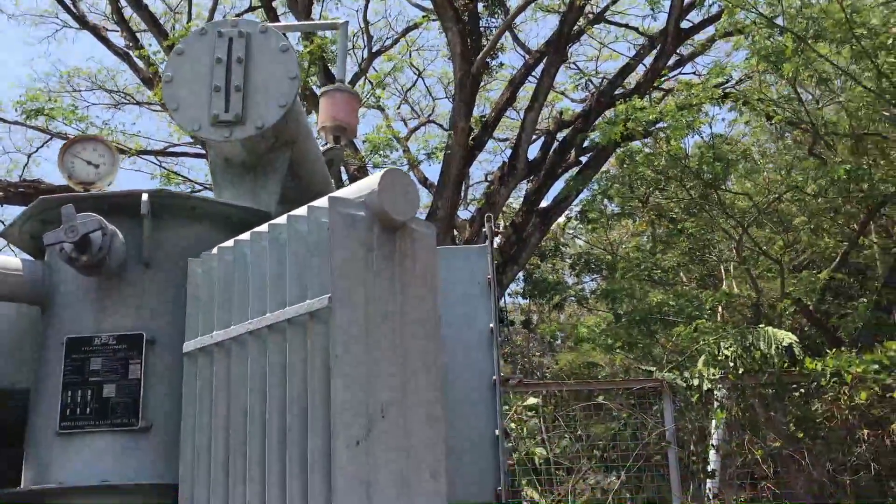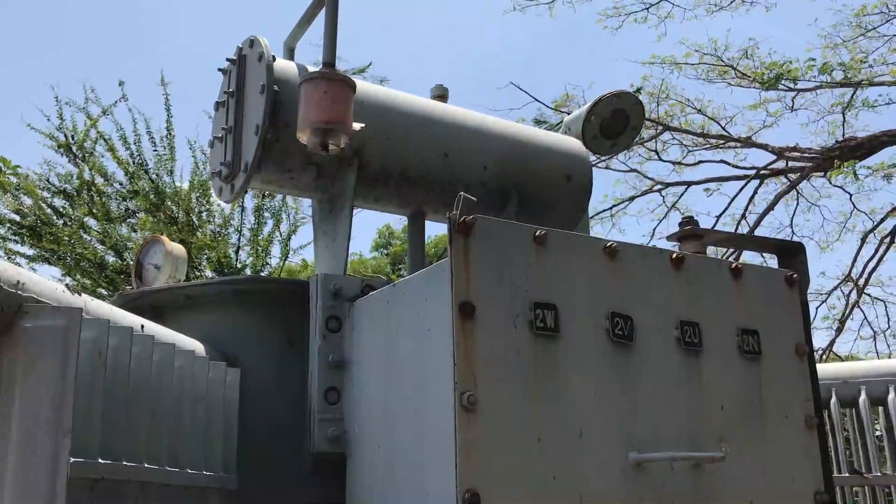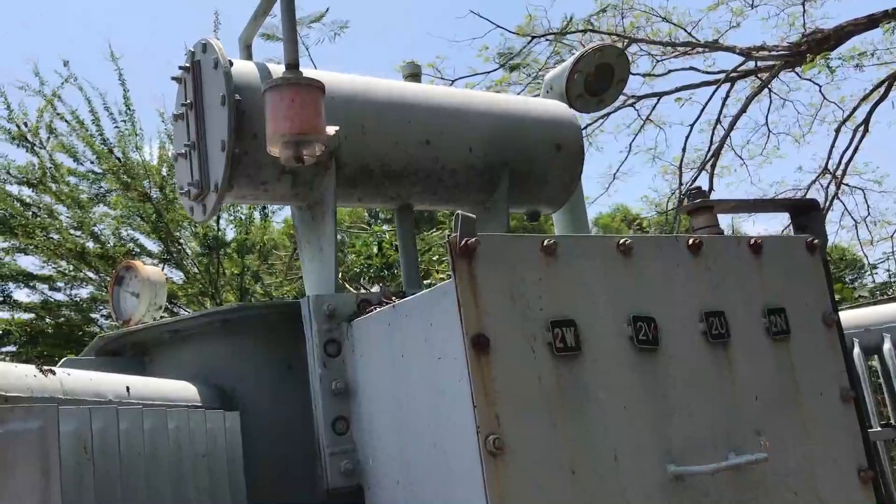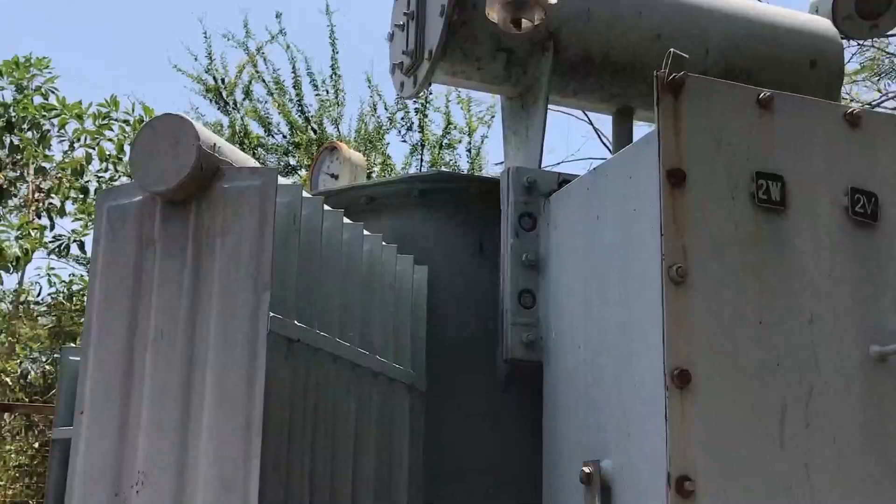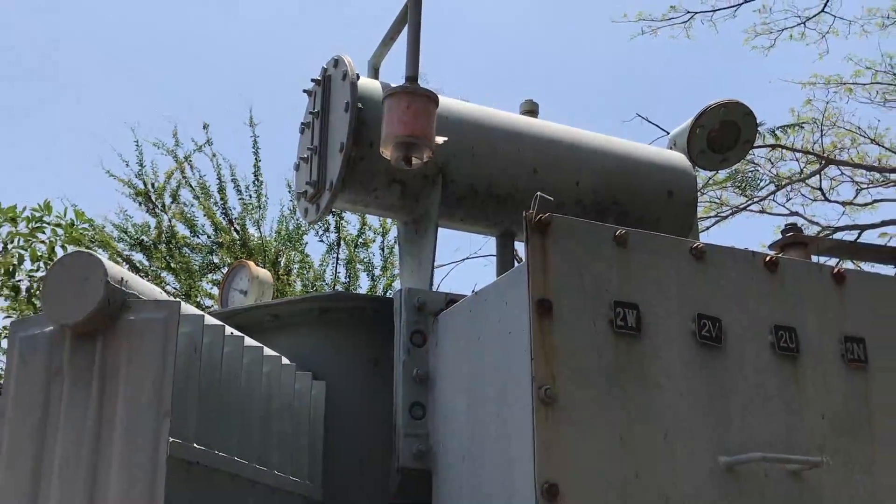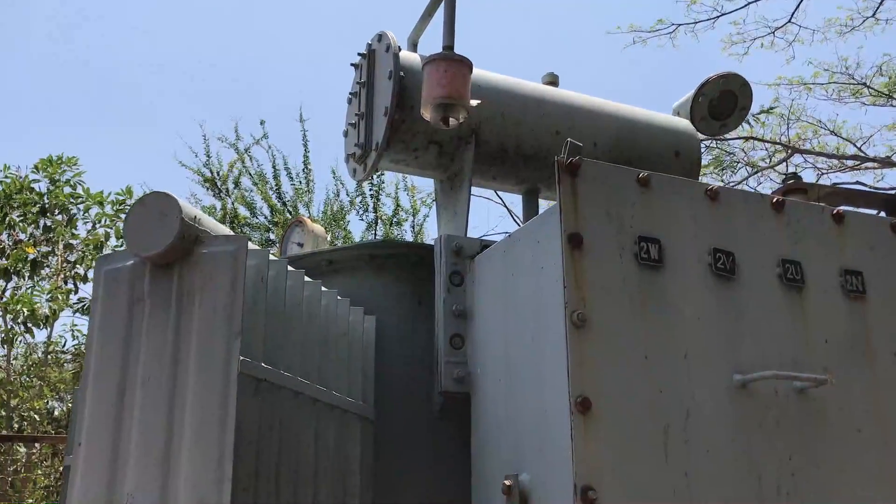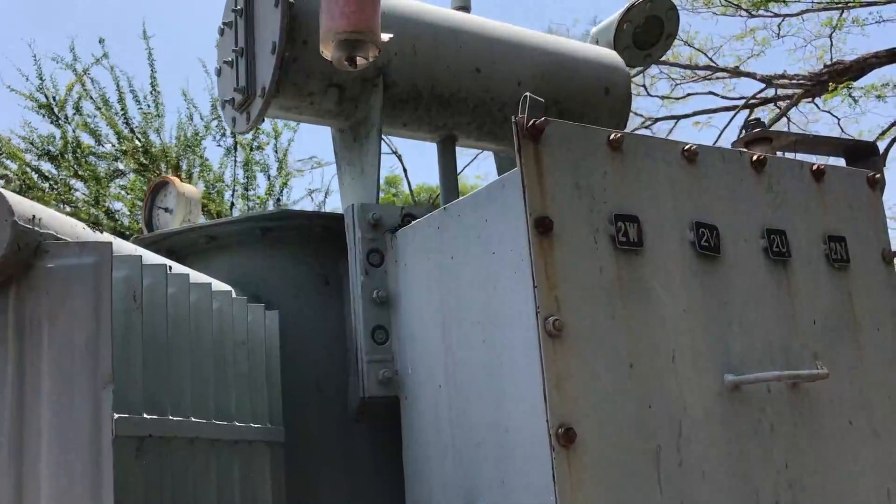Buchholz relay is a protective relay. It has two points: the above point is called DF1 and the below point is called B point. The A point is used for small short circuits and the B point is used for high faults. The Buchholz relay is placed between the conservator tank and main tank.